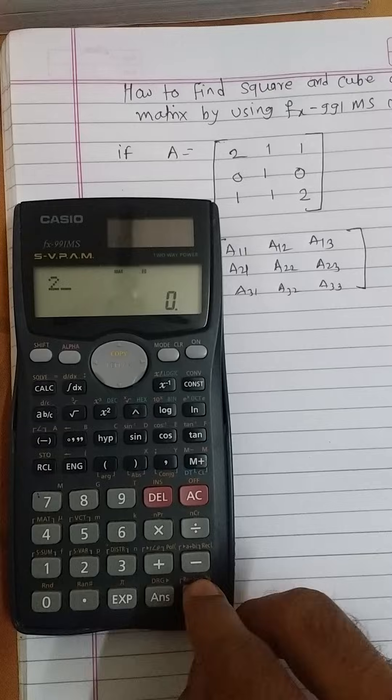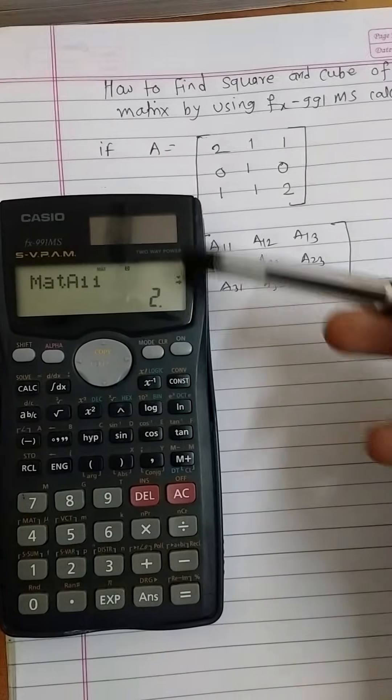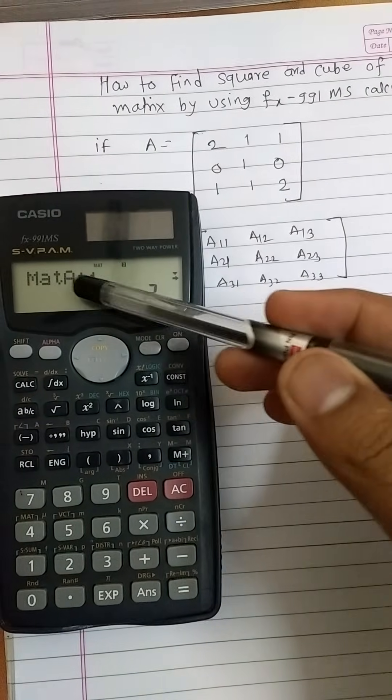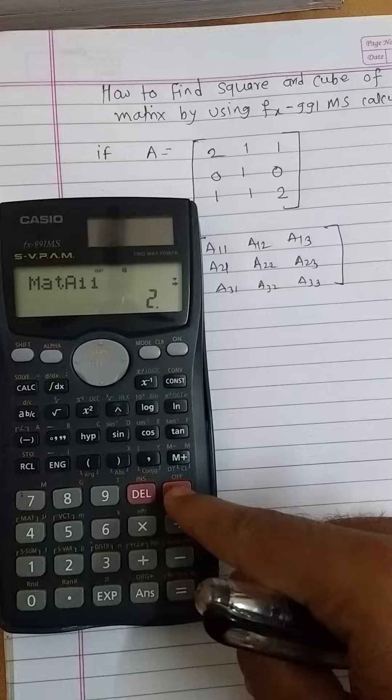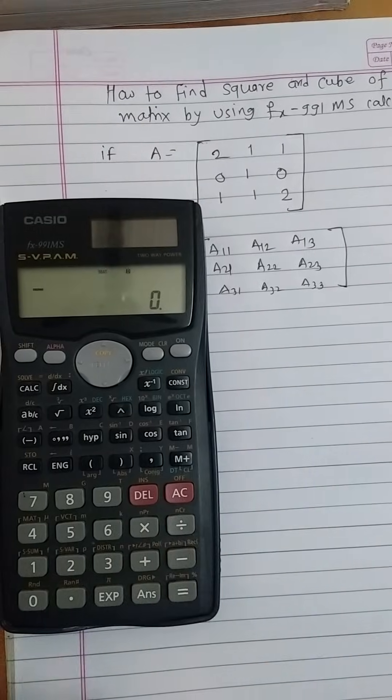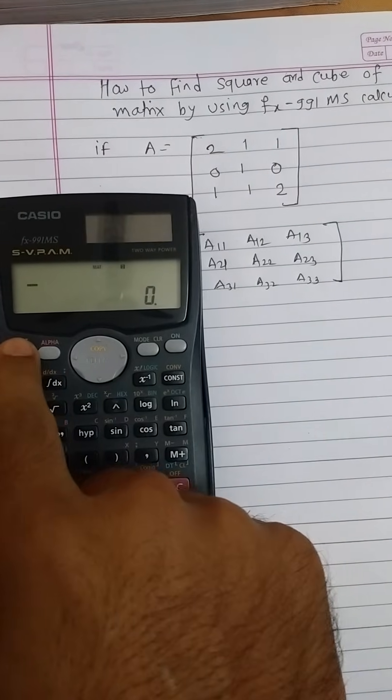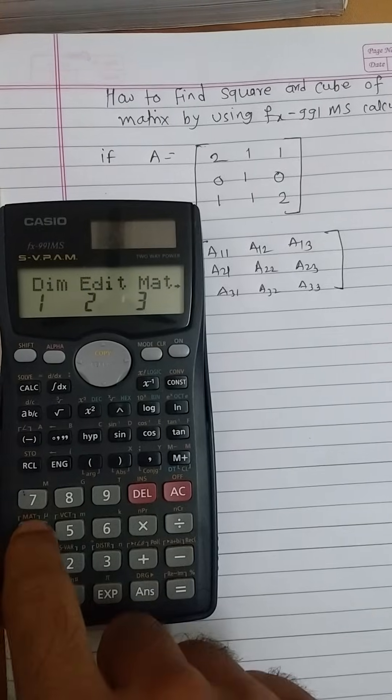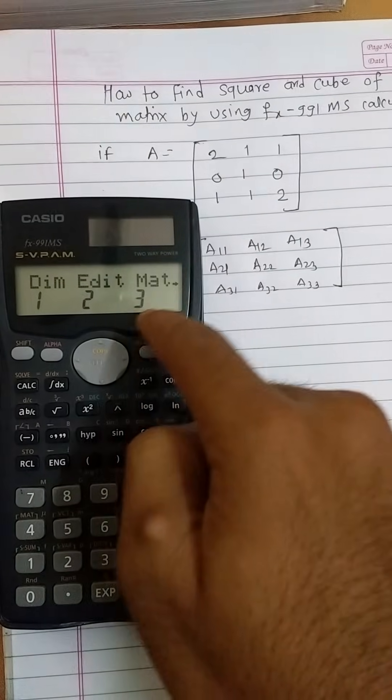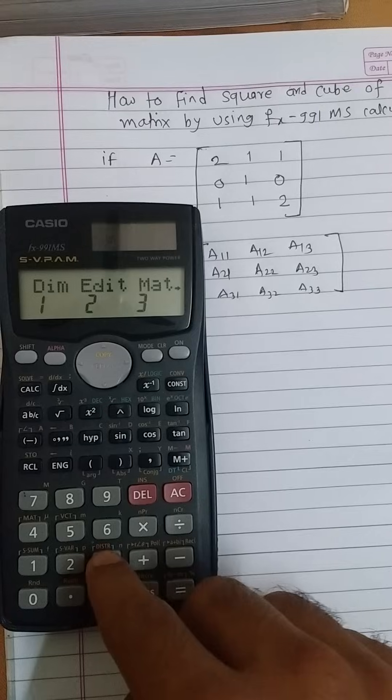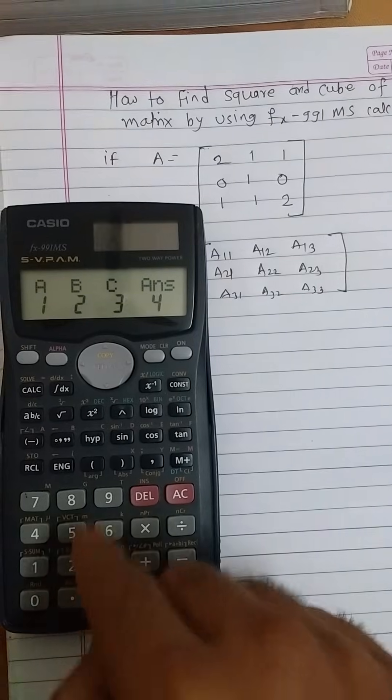After putting all the entries, we again see MatA. Then press AC button to clear the screen. Then press shift and four again and press three to generate matrix A. And we will see again four options.